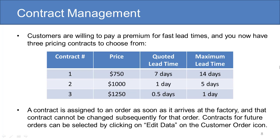Customers are willing to pay a premium for fast lead times, and you now have three pricing contracts to choose from. Contract 1: price equals $750, quoted lead time 7 days, maximum lead time 14 days. This is the contract that the factory starts with.